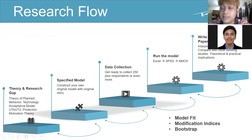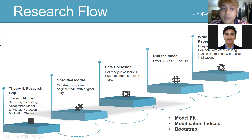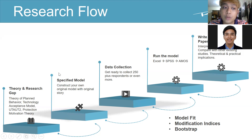If you would like to utilize SEM, the first thing you need to do is decide what theory to use. There are thousands of theories that utilize structural equation modeling — for example, the theory of planned behavior, technology acceptance model, UTAUT2, protection motivation theory, and others. That's why you have to read first before collecting data.